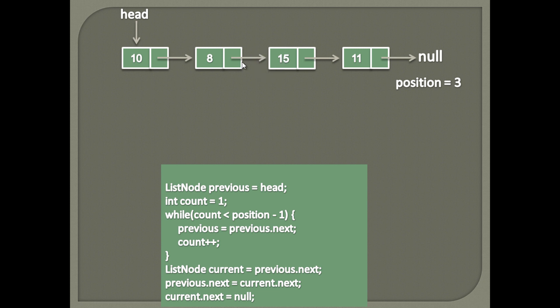That is, we need to traverse till position 2 and delete the link. Below is the algorithm for this. Let's see the working of it through a demo. In order to delete a node at position 3, we need to traverse the list till position 2. For that, we create a temporary list node variable by name 'previous' and point it to head.